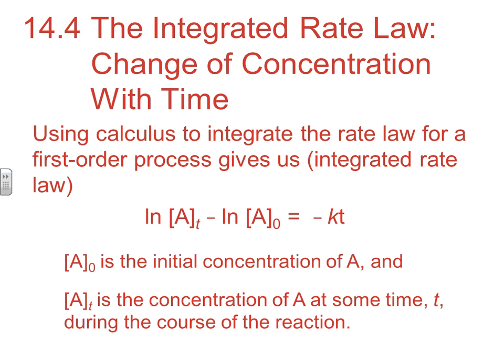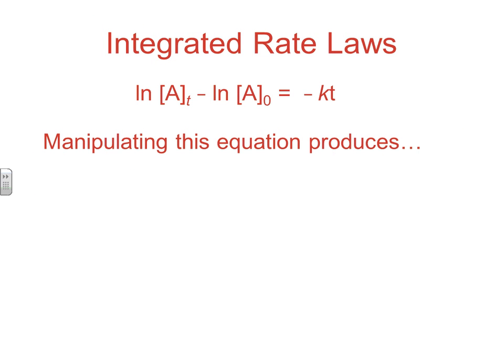For a first order process, after the math you end up with: the natural log of A at any time minus the natural log of A at the beginning equals negative kt. A-naught is your initial concentration; A-t is the concentration at any point through the course of the reaction. If you manipulate this equation just a little bit, it should look more familiar.